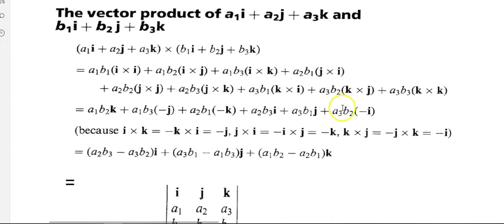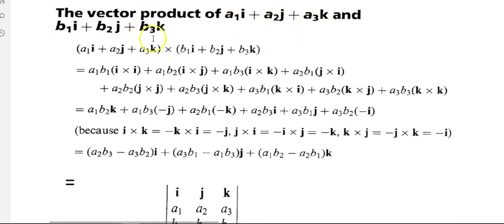We're going to look now at a very awkward way of doing the vector product, and then show a very quick and easy way as well. We're looking at the cross product of a1i + a2j + a3k with b1i + b2j + b3k.